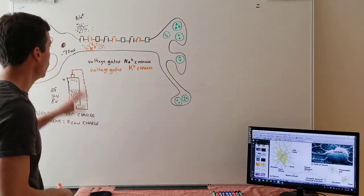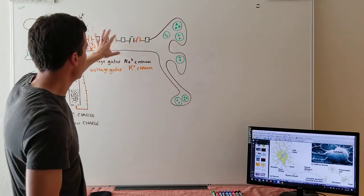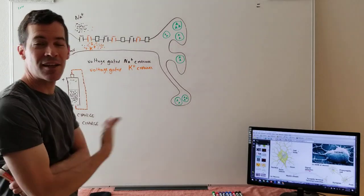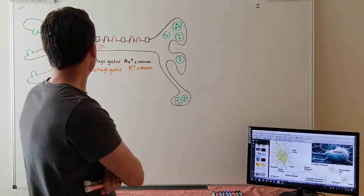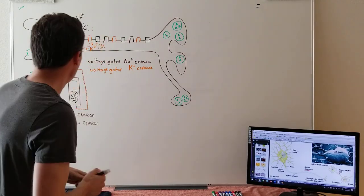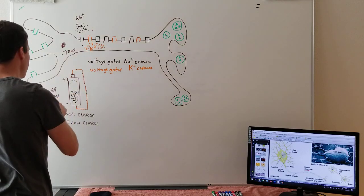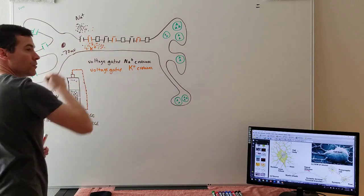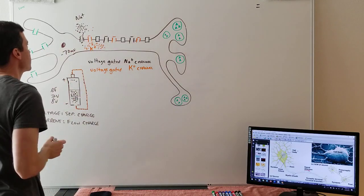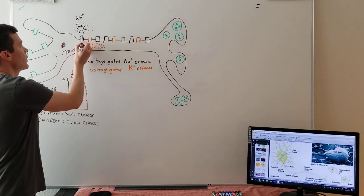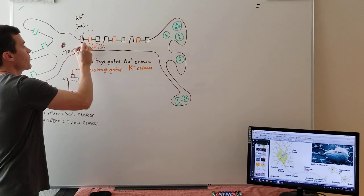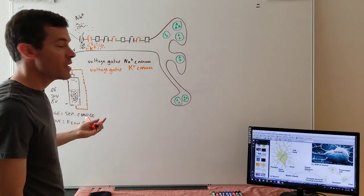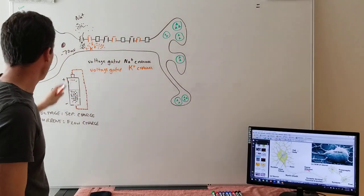Same principle for the voltage-gated potassium ion channel. We have voltage — now we want to create current. If voltage causes the sodium gate to open, sodium rushes in from high to low concentration. Charged particles are now flowing — that's current. Sodium rushes in, making the inside of the nerve cell more positive. If my bank account was at negative 70 and you start giving me pluses, I'm climbing out of debt: negative 68, 67, 66, 65...